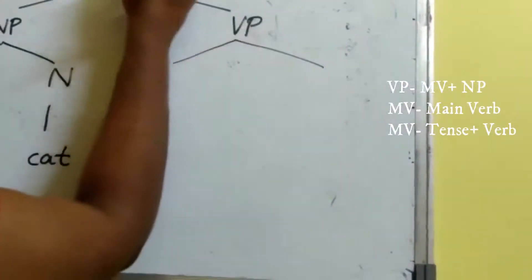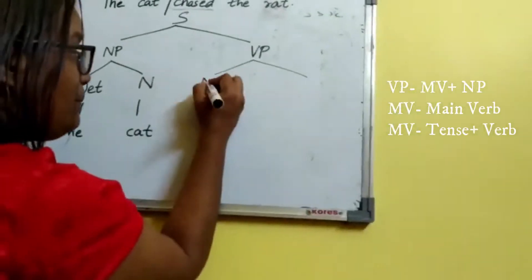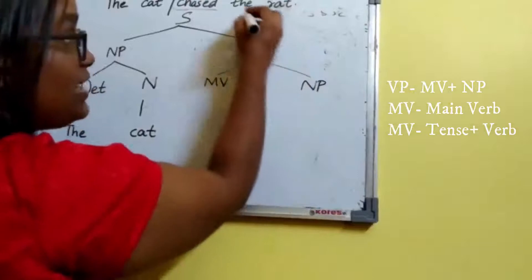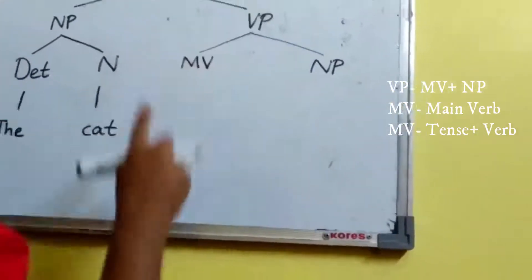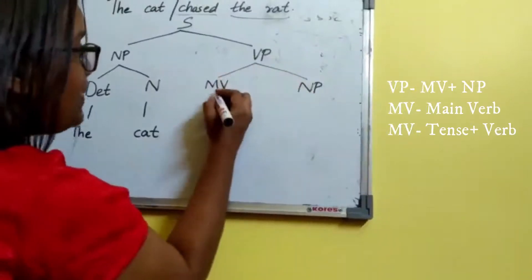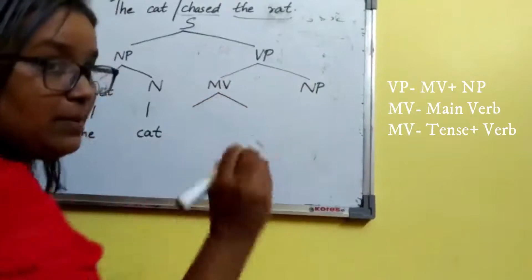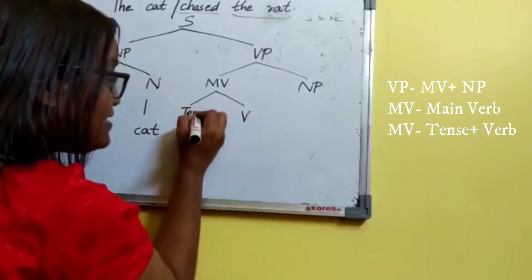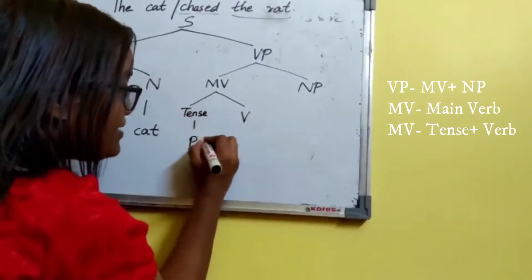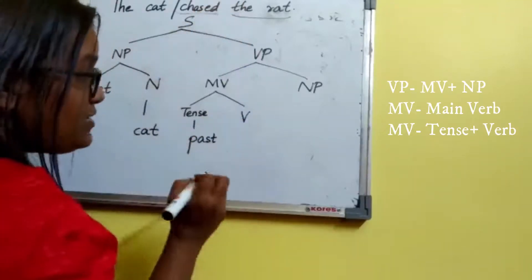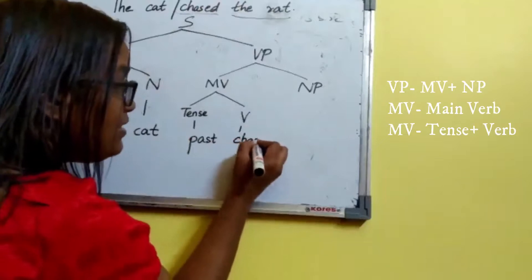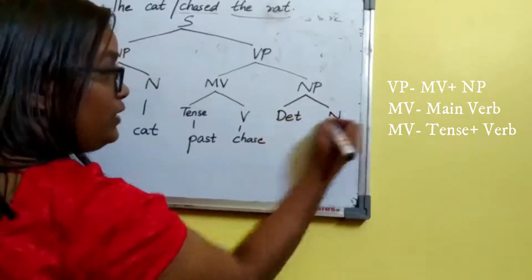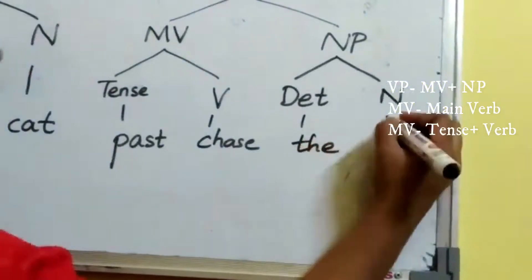VP is equal to main verb plus NP. 'Chased' is the main verb, and 'the rat' is another noun phrase because there is a noun here. We split the main verb 'chased' into tense and verb — tense is past (the '-ed' marks past tense) and the verb is 'chase'. NP 'the rat' is again determiner plus noun: determiner is 'the' and noun is 'rat'.